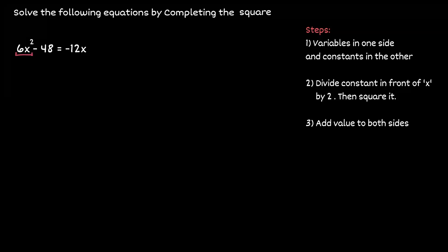Notice that the value in front of x squared is not 1. We cannot complete the square until this value is 1. To make the value in front of x squared be 1, let's divide 6 to every single term in the equation.